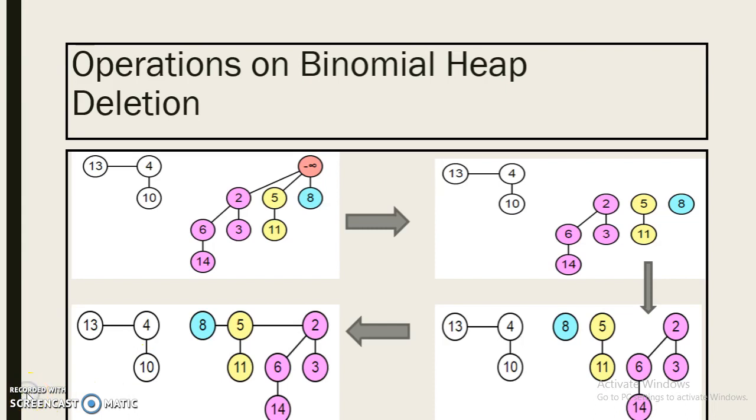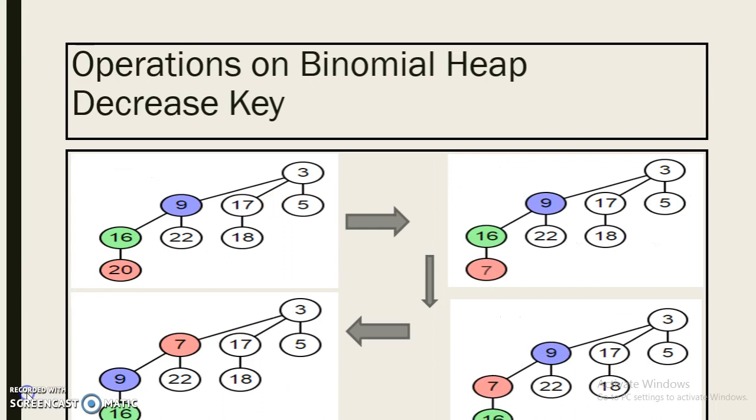Our next operation is decrease key. In decrease key operation we replace a node value with a lower value, hence the node will bubble up through its ancestors until the tree meets the conditions of a heap.